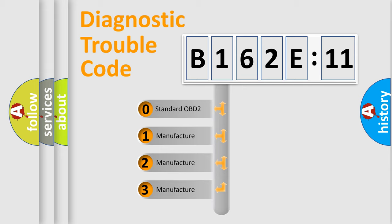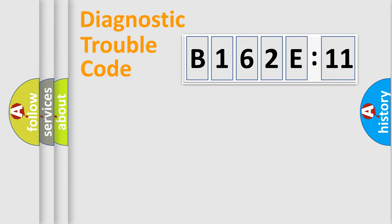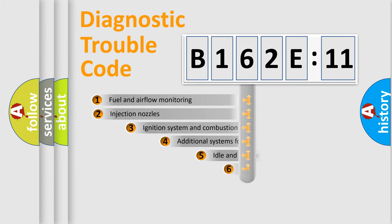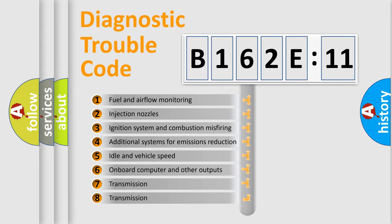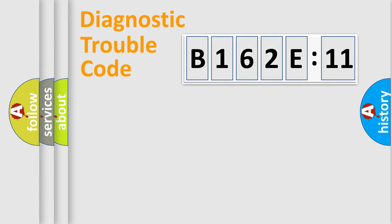If the second character is expressed as zero, it is a standardized error. In the case of numbers 1, 2, 3, it is a manufacturer-specific error. The third character specifies a subset of errors. The distribution shown is valid only for the standardized DTC code. Only the last two characters define the specific fault of the group.